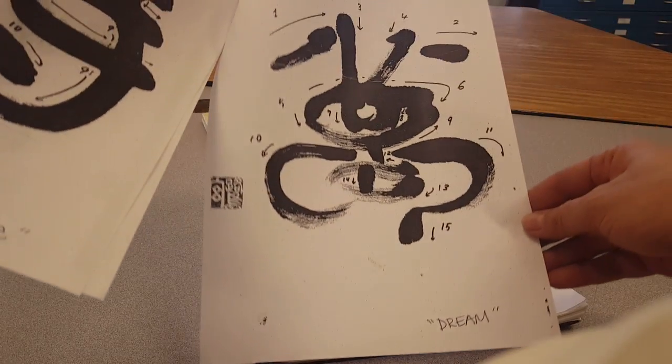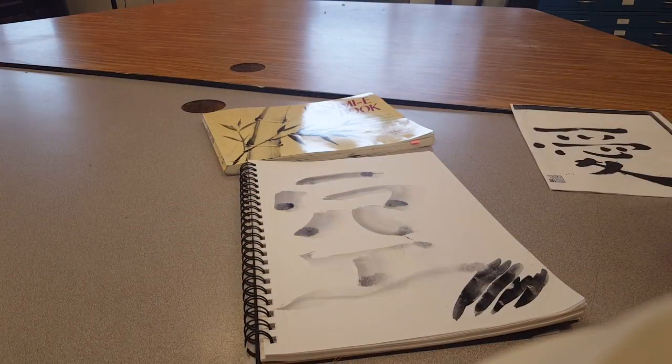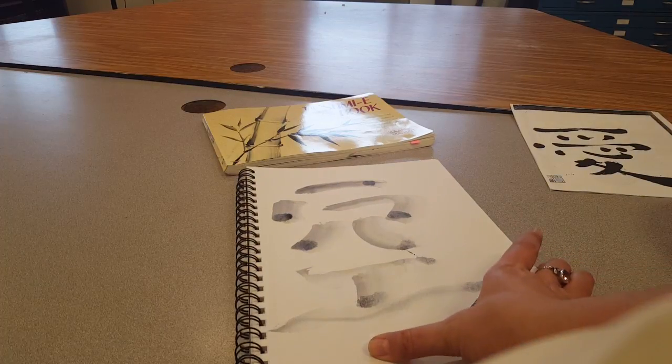So you're going to do a series of all of the ones in the packet on your table. There's love, sky, time, and dream. You're going to do those in your sketchbook for practice to start Sumi painting.